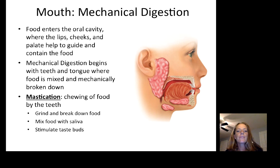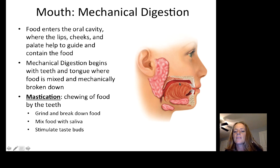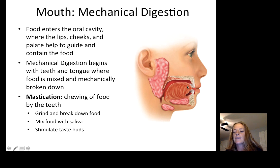Mechanical digestion begins in the oral cavity, where lips, cheeks, and the palate guide and contain food. The teeth and tongue mix and mechanically break down food — the technical term for chewing is mastication. It's also important to mix food with saliva, because taste buds on the dorsal surface of the tongue require chemicals dissolved in saliva to produce the sensation of taste.